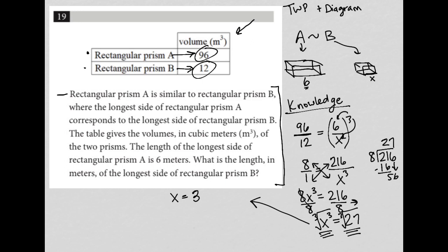Cube root just means what number times itself three times would get you the value under that cube root radical. So our answer here is 3. The length for rectangular prism B that corresponds with the 6 from rectangular prism A is 3. Thank you.